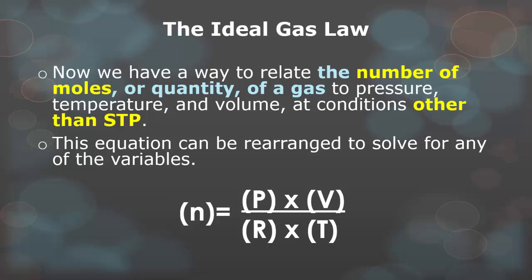We can take the PV equals nRT formula and rearrange it so we can find just the number of moles. If you know pressure, volume, and temperature, and we use the ideal gas constant, we can then figure out how many moles of any gas are in a sample.